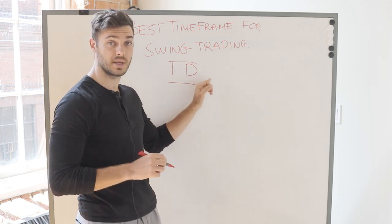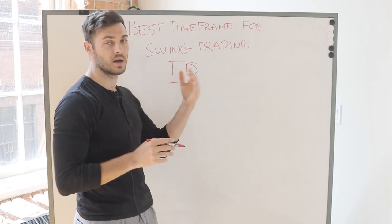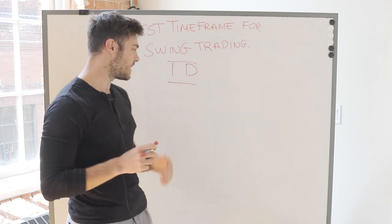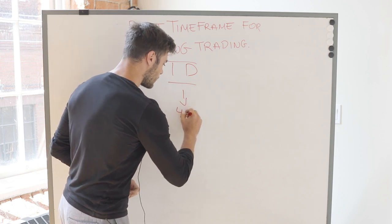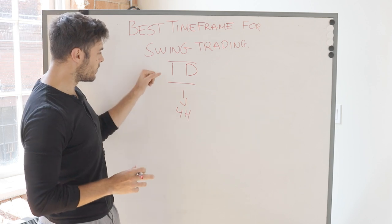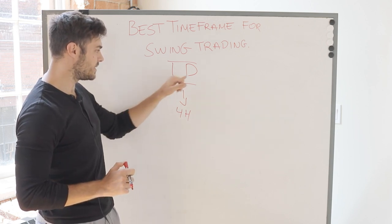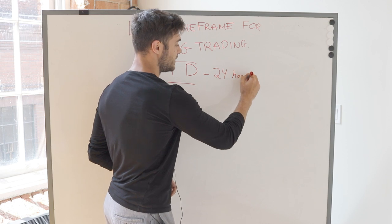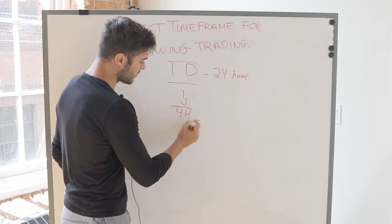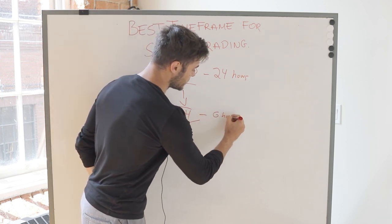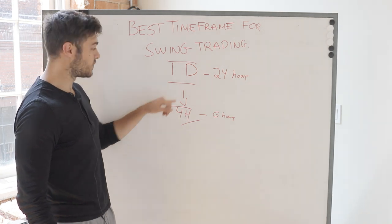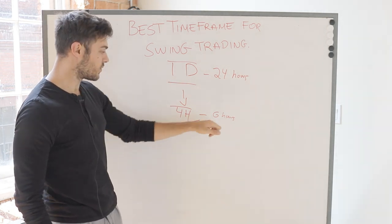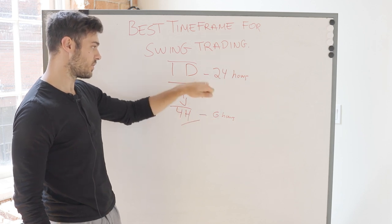The daily time frame will help you ascertain good levels of support and resistance as well as overbought and oversold conditions. However, we also want to look a little bit deeper into the intraday trend, which leads us to the four-hour chart. The four-hour chart is the more popular intraday version of the day chart. With currencies and futures, you usually have 24 hours in a session, and breaking that into four-hour increments gives you six candles per day.